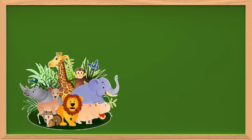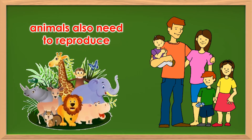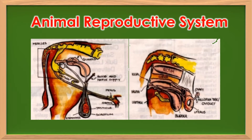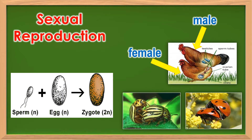Animals cannot live forever. Like humans, animals also need to reproduce. They have also their own reproductive system that makes them able to do such life process. Most of them perform sexual reproduction involving male and female animals. In this way, extinction is prevented and diversity is maintained in nature.